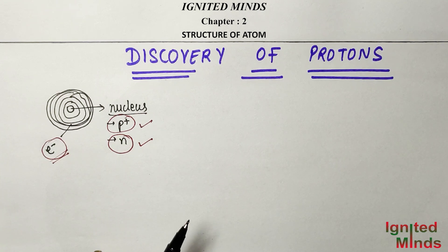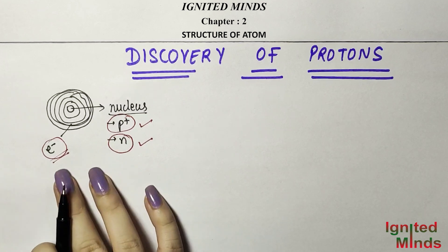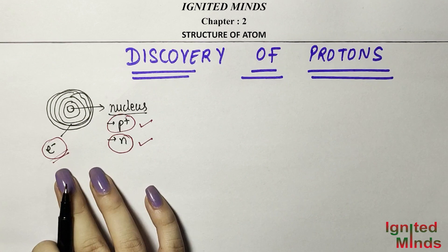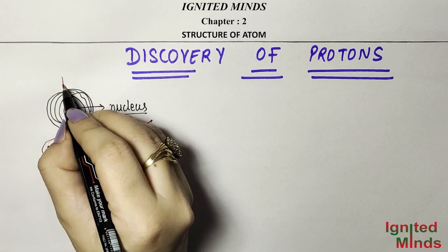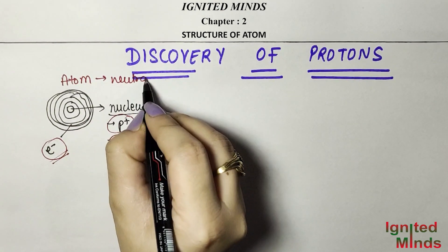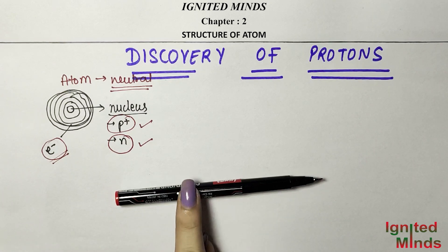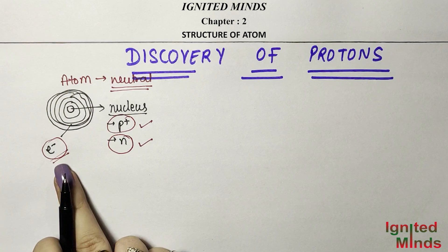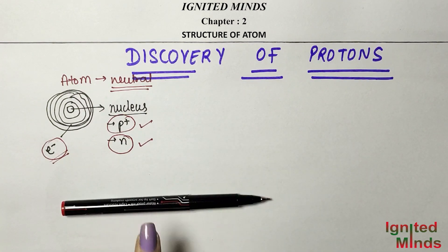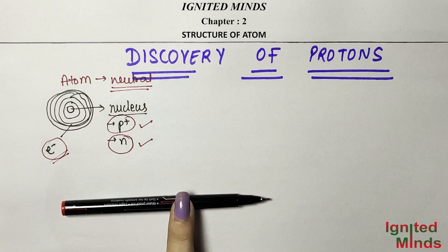Before protons were discovered, electrons were already discovered. Scientists knew atoms are neutral. For example, if you touch a pen, you don't feel any current. Even though a negative charge particle — the electron — had been discovered, touching objects showed no current, meaning the atom is neutral.